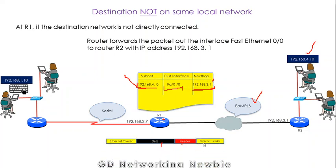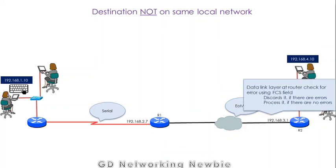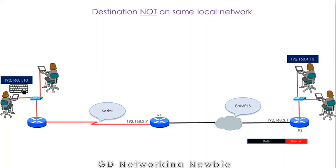Ethernet header and trailer are added to the packet, forming a frame. That frame travels from router R1 to router R2. Once R2 receives the frame, it again checks for errors using FCS. If there are errors it discards the frame; if there are no errors, R2 processes it — meaning it decapsulates the frame by removing the Ethernet header and trailer — and now has the IP packet. That IP packet again contains the IP header with the same destination IP address, because that is the ultimate destination.